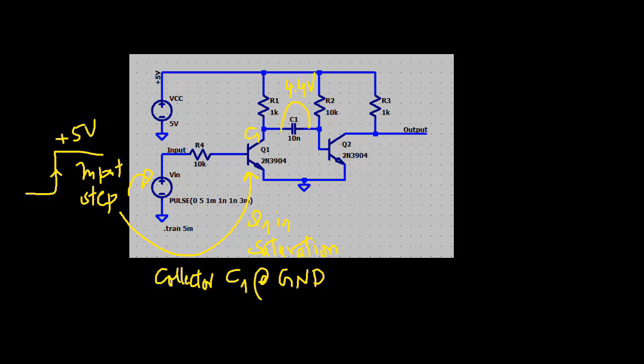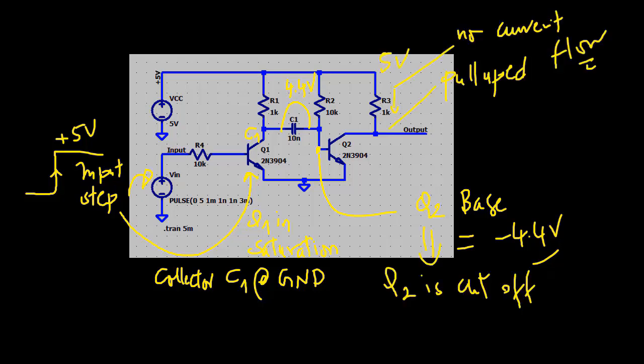This brings the base of Q2 for short time negative to about minus 4.4 volts. Q2 is then cut off. No current flows through R3 and so its output jumps to plus 5 volts. This is the beginning of the output pulse.